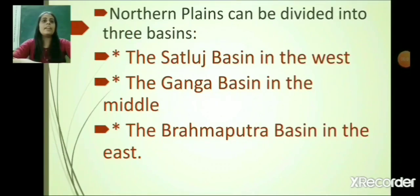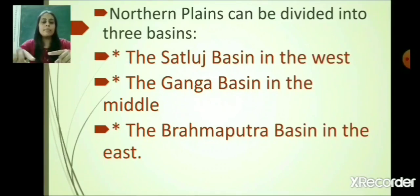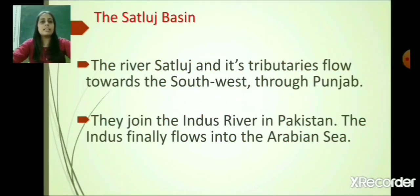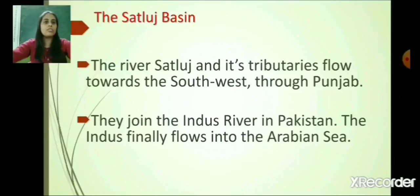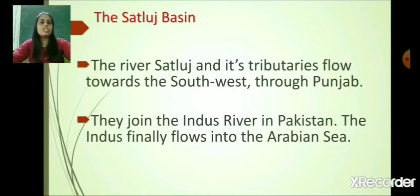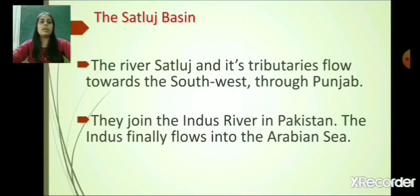The northern plains can be divided into three basins: the Satlaj Basin on the west side, the Ganga Basin in the middle, and the Brahmaputra Basin in the east. The river Satlaj and its tributaries flow towards the south-west through Punjab, and finally join the Indus river in Pakistan. The Indus finally flows into the Arabian Sea.